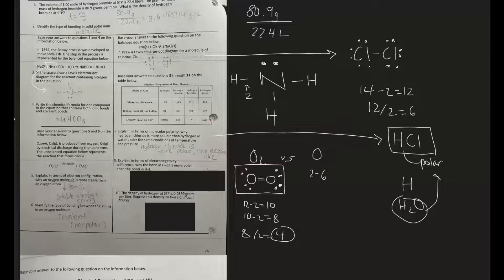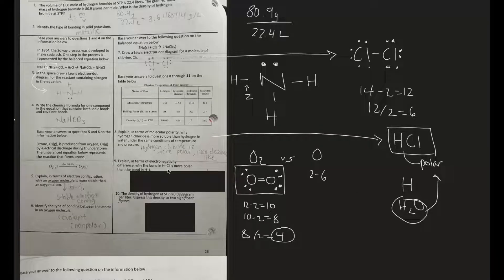Number nine: Explain in terms of electronegativity difference why the bond in HCl is more polar than the bond in HI. For this, take out your reference table and look up their electronegativity. Hydrogen's electronegativity is 2.2 and chlorine's electronegativity is 3.2, so that's a difference of 1. Now we want to look at iodine's electronegativity. Iodine's electronegativity is 2.7, so 2.7 minus 2.2 is 0.5. HCl has a greater electronegativity difference. The greater the electronegativity difference, the more polar it is because the sharing of electrons is going to be more unequal for more polar molecules versus a non-polar one.